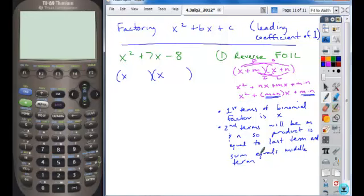So when you look at this, what two factors of negative 8 have a sum of plus 7? So a positive 8 and a negative 1, do these have a product of negative 8?